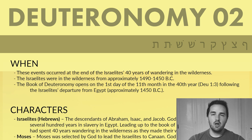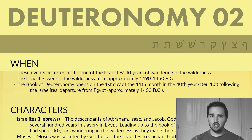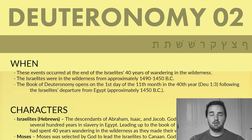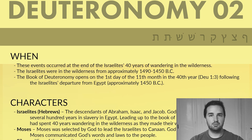Deuteronomy chapter 2. When did the events of this chapter take place? This occurred right after the Israelites had spent 40 years wandering in the wilderness. So they've just finished up their wanderings. Now Moses is presenting the law to them, and that's what Deuteronomy is all about. The book of Deuteronomy tells us that it opens on the first day of the 11th month in the 40th year after the Israelites left Egypt.